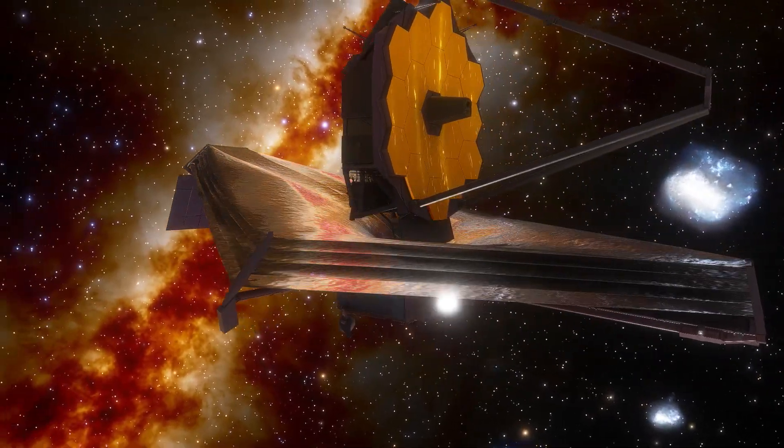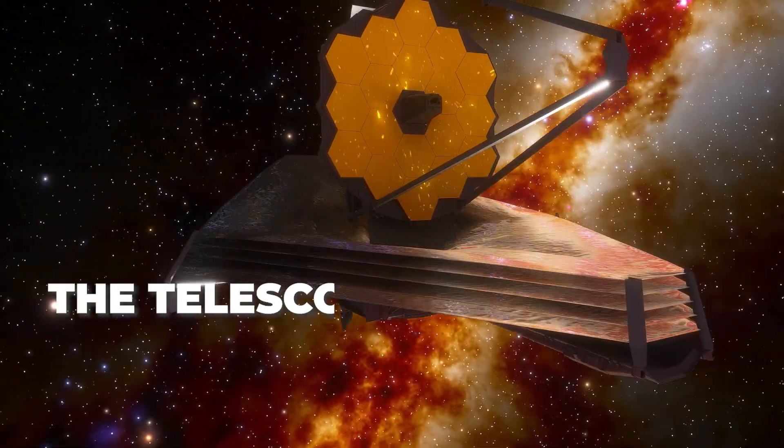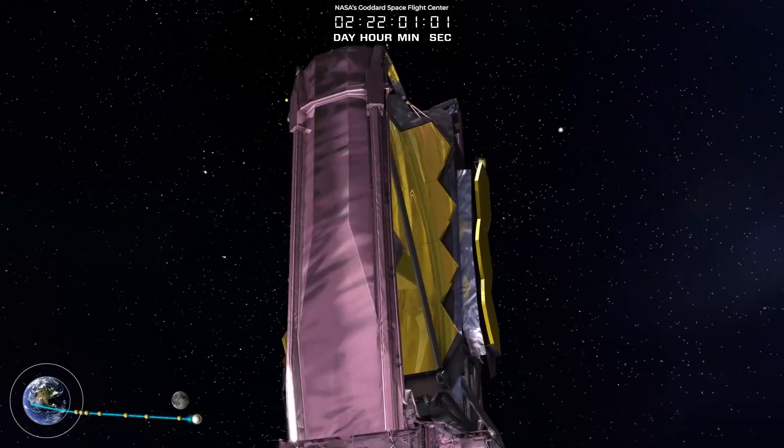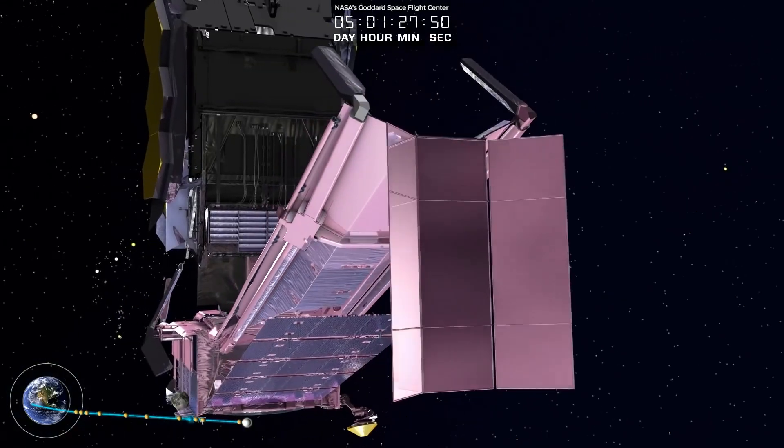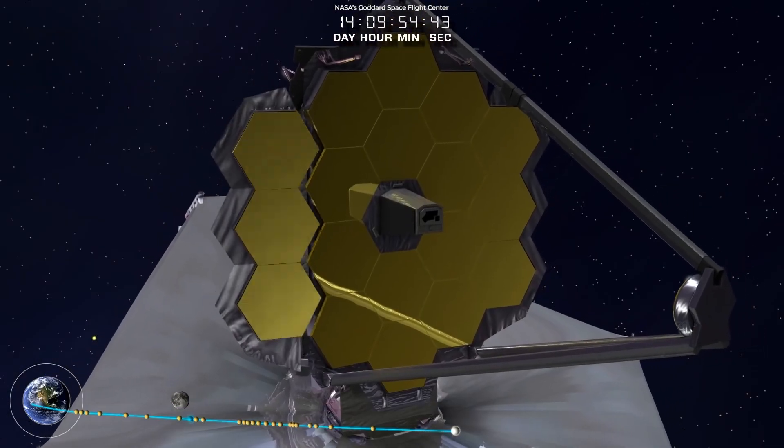Some have called NASA's James Webb Space Telescope the telescope that ate astronomy. It's the most powerful space telescope ever built and a complex piece of mechanical origami that has pushed the limits of human engineering.